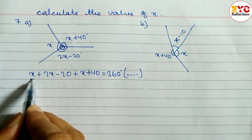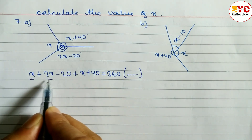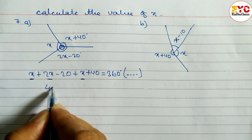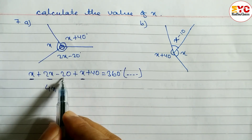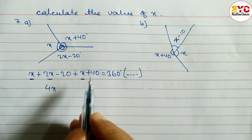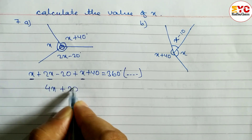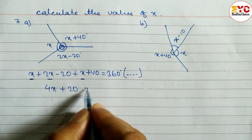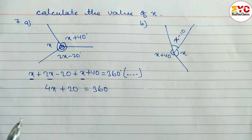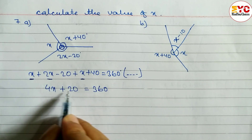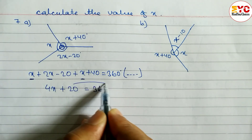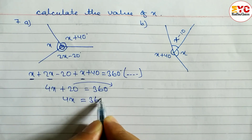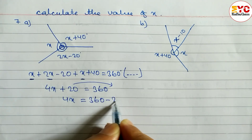Now we add the like terms: x plus 2x plus x gives 4x. Then for the constants, minus 20 plus 40 gives plus 20. So we can write 4x plus 20 equals 360 degrees. These two are unlike terms, so we take 20 to the right side: 4x equals 360 minus 20.